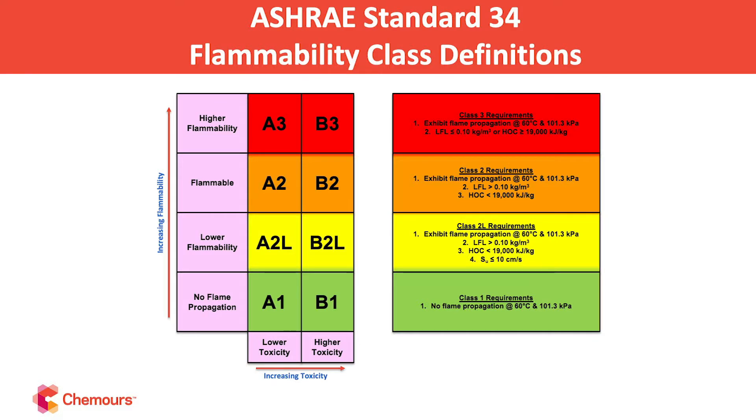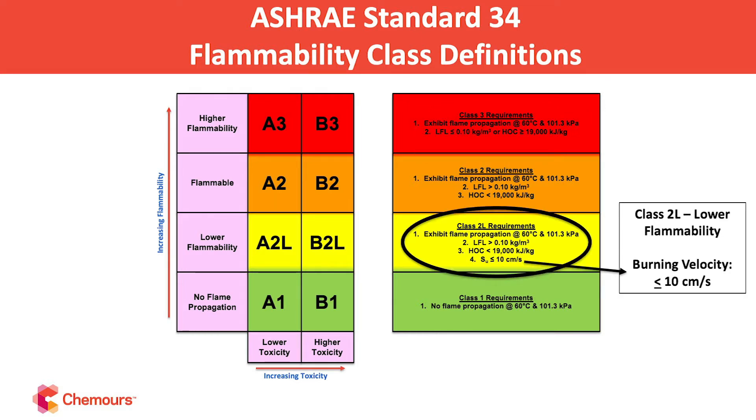Today I want to focus on flammability properties and really what defines an A2L. If we remember back to the chart I showed on the ASHRAE Standard 34 Classification System, flammability really was in three categories. One, which is typically non-flammable or no flame propagation, and then three was highly flammable or explosive. Those are typically hydrocarbon type refrigerants. And in the middle was Class 2 and a subdivision of that, 2L.